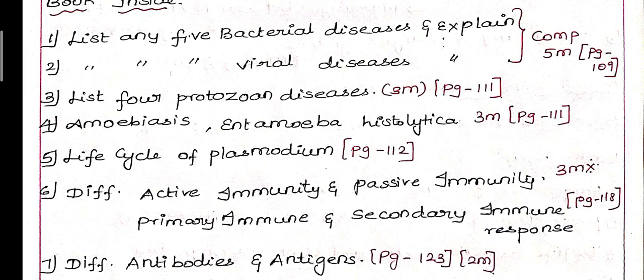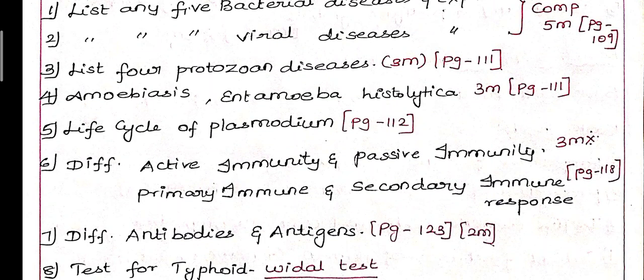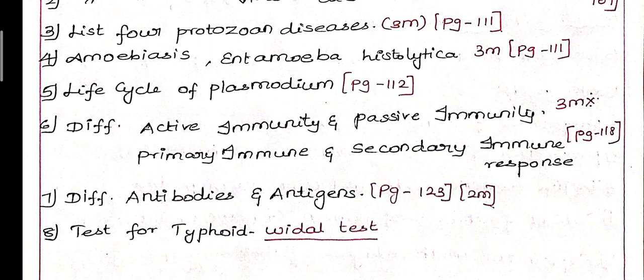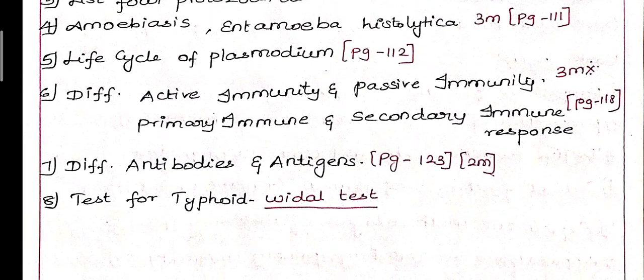Third question: List any 4 protozoan diseases. The heading covers amoebiasis, African sleeping sickness, and malaria with causative agents, on page 111. Fourth question: Amoebiasis by Entamoeba histolytica. Sometimes explain the structure of Entamoeba histolytica with diagram, page 111, 3-mark question. Fifth question: Life cycle of Plasmodium, on page 112, important question.